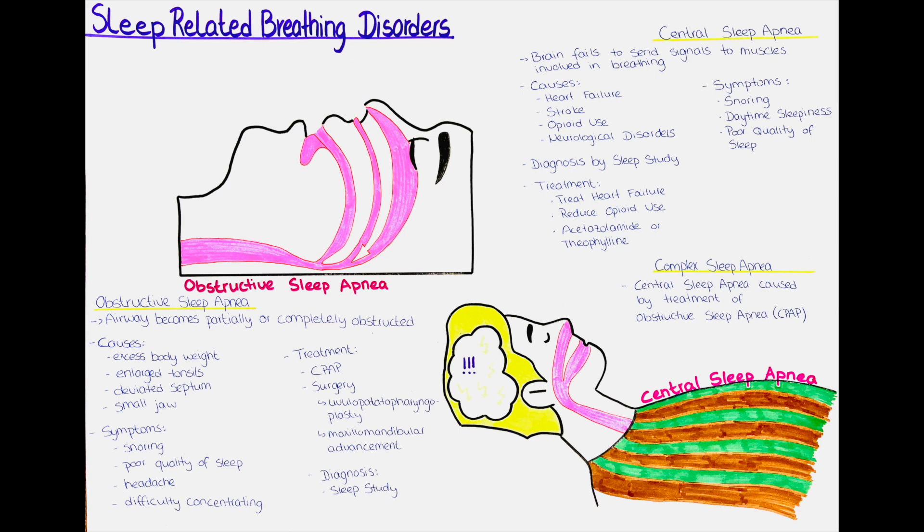This brainstem dysfunction can be caused by a variety of factors, including heart failure, stroke, opioid use, and certain neurological disorders. People with central sleep apnea may also have a history of snoring, daytime sleepiness, and poor quality of sleep.